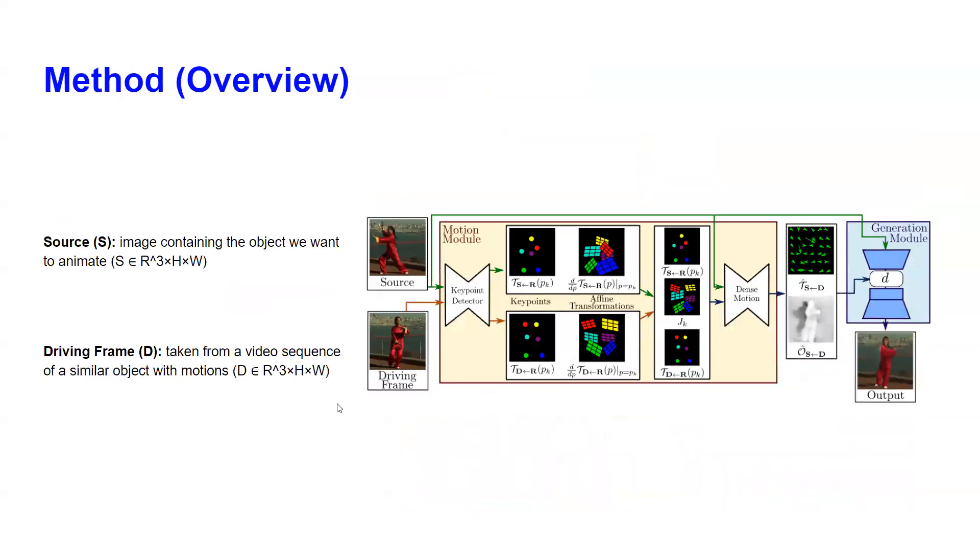Let's get into the method. The brief overview of the architecture is that we can divide it into two separate parts: one is the motion module and the second is the generation module. For the motion module, we input the source image and the driving video as a frame.